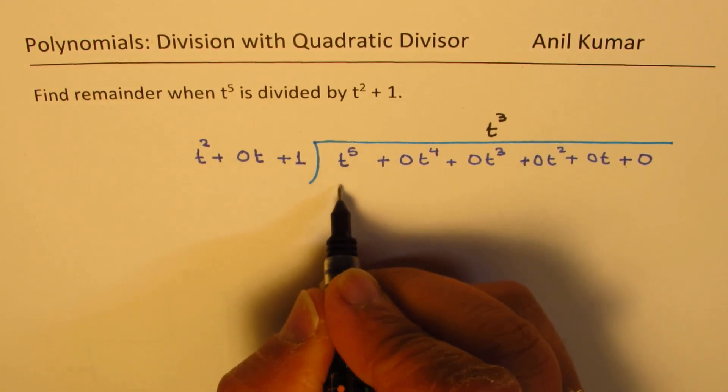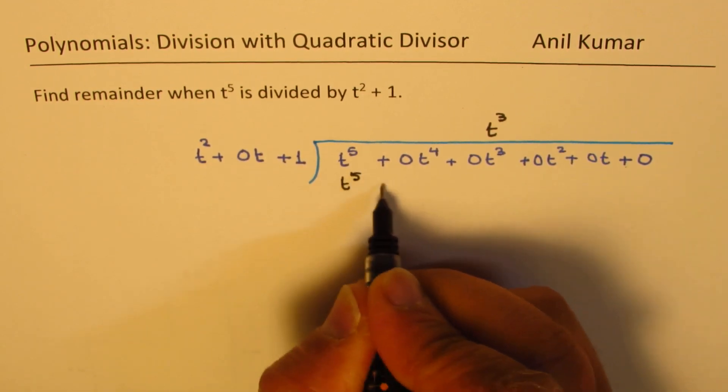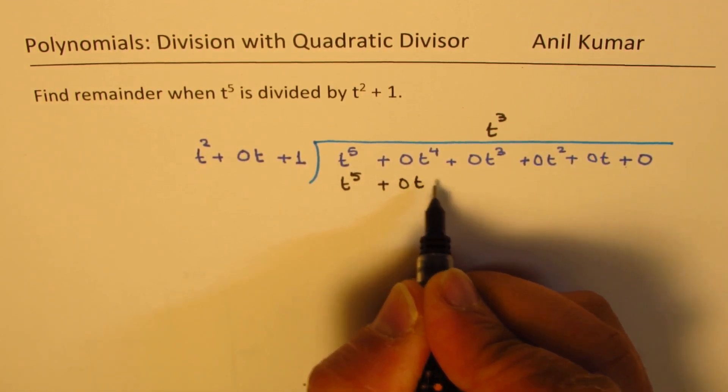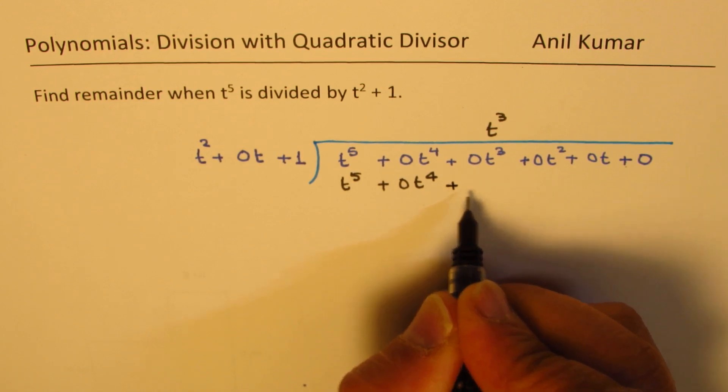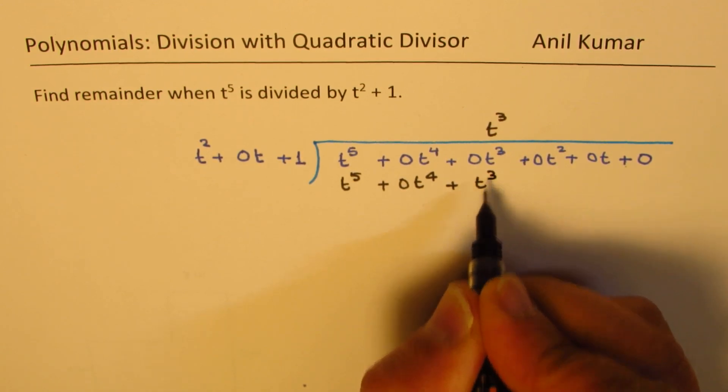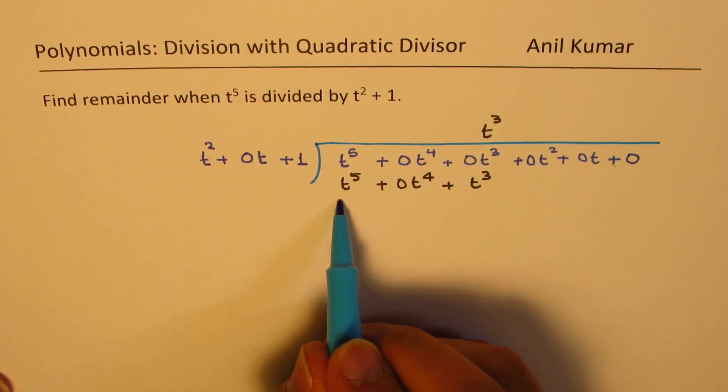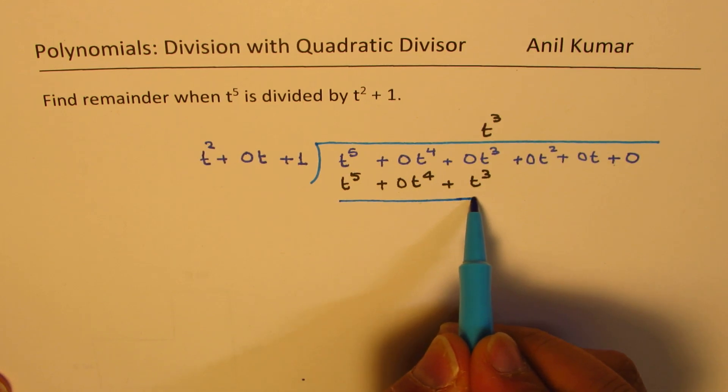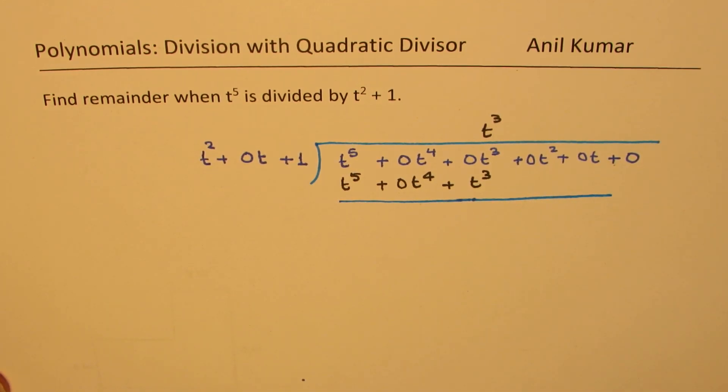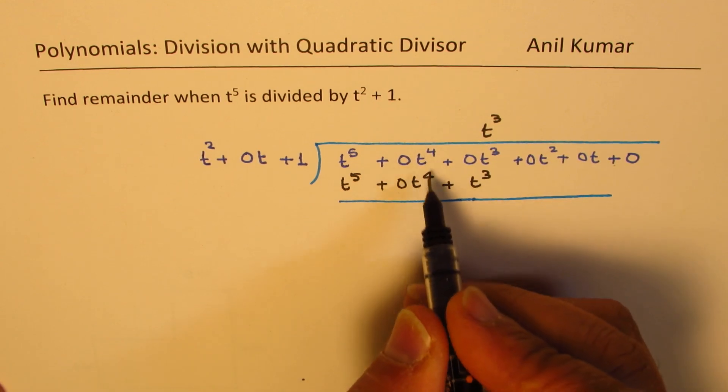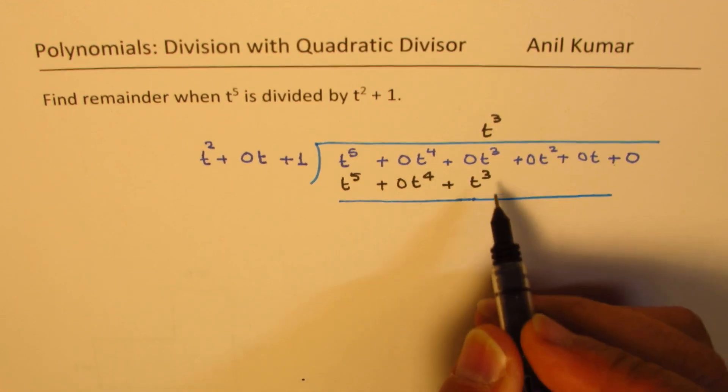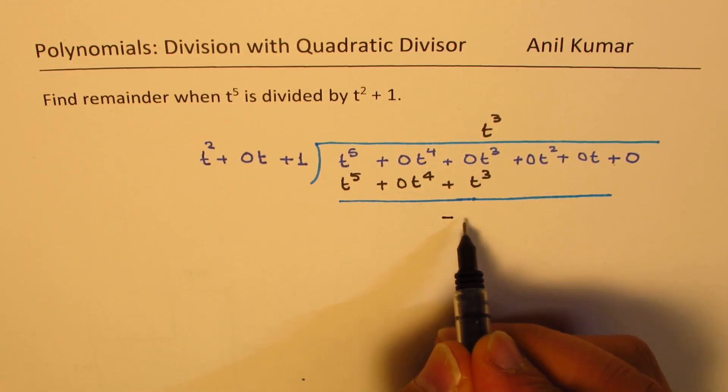When you multiply by t cube, you get t to the power of 5 plus 0t to the power of 4 plus t cube. So now, when you take it away, what do you get? Here you get 0, here you get again 0 and here you get minus t cube.